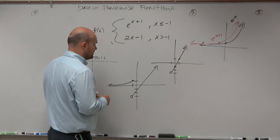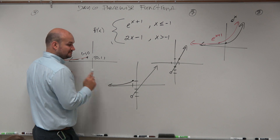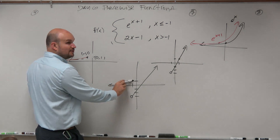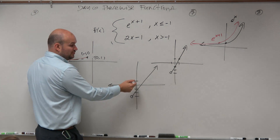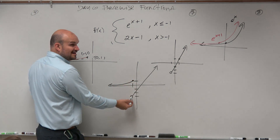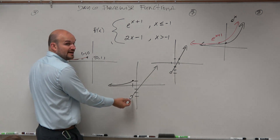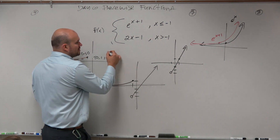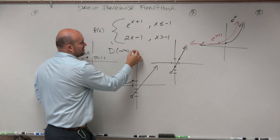Now let's talk about domain and range. The domain — as we go from the left, we've got to stop at negative 1, but it's included at negative 1. When we jump down to the other piece where it's not included, that's OK because the function is still included at negative 1. Does everybody see that? Then we can continue on our merry way. So our domain is from negative infinity to infinity.